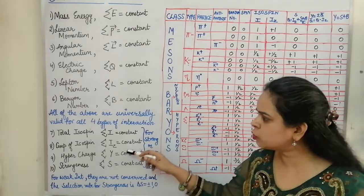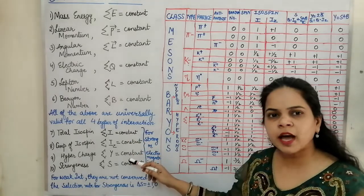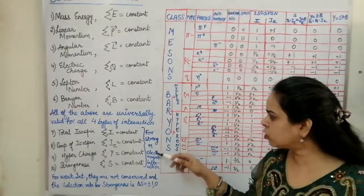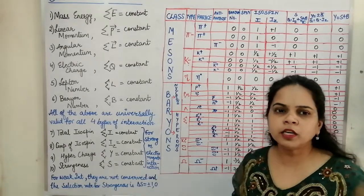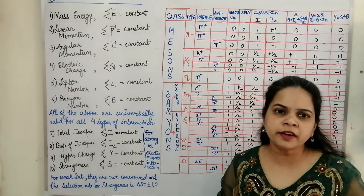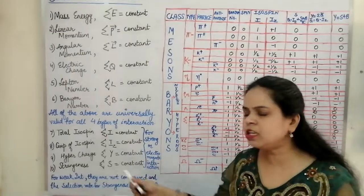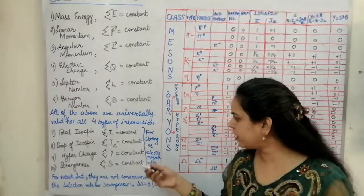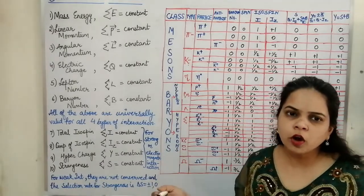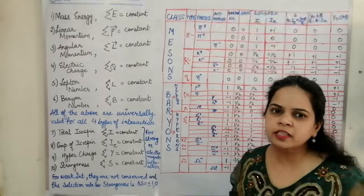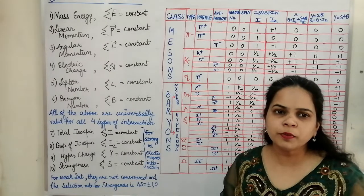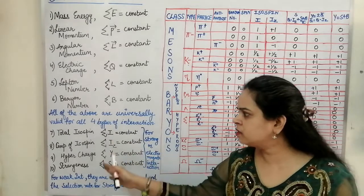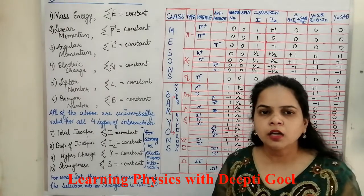These four conservation laws — total isospin, z-component of isospin, hypercharge, and strangeness — must be conserved for strong or electromagnetic interactions. If a process decays through strong or electromagnetic interaction, we must verify these are conserved; otherwise that process cannot take place through those interactions. If isospin, hypercharge, and strangeness are not conserved, the process is then said to decay via weak interaction, because for the weak interaction these quantities are not conserved.